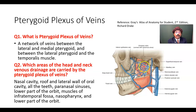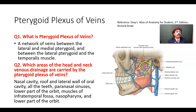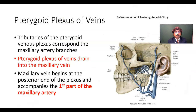The pterygoid plexus of veins actually receives communication with all the veins which follow the branches of the maxillary artery. So, the tributaries of the pterygoid plexus of veins correspond to the maxillary artery branches.